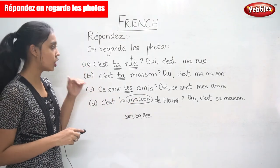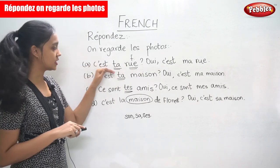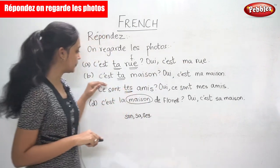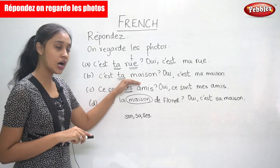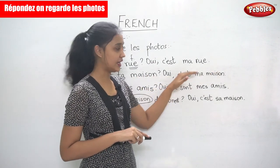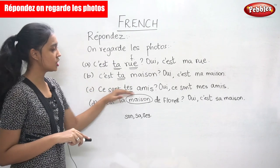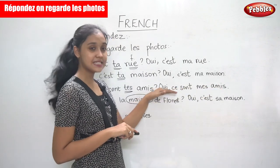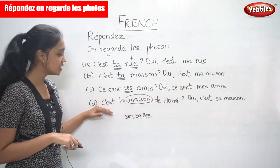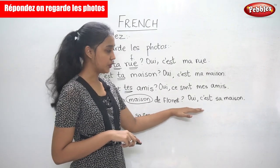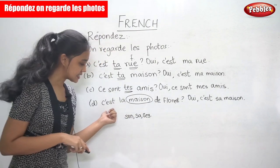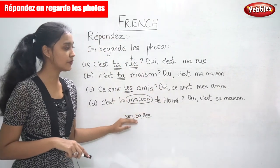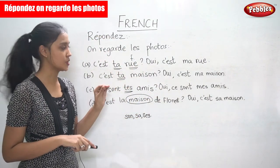Let's read the questions and answers again. 'C'est ta rue' — it is your street. 'Oui, c'est ma rue' — it is my street. 'C'est ta maison' — it is your house. 'Oui, c'est ma maison' — it is my house. 'Tes amis' — they are your friends. 'Oui, ce sont mes amis' — these are my friends. 'C'est la maison de Florent.' 'Oui, c'est sa maison' — it is her house. Now we know how to answer questions using the possessive.